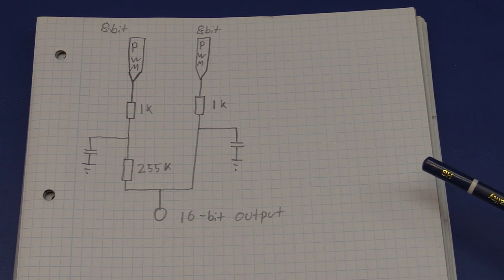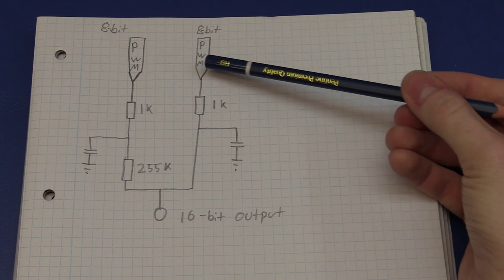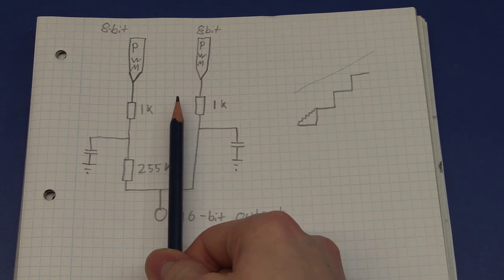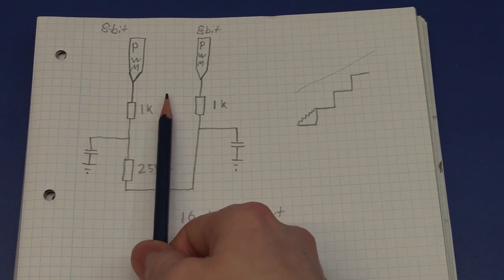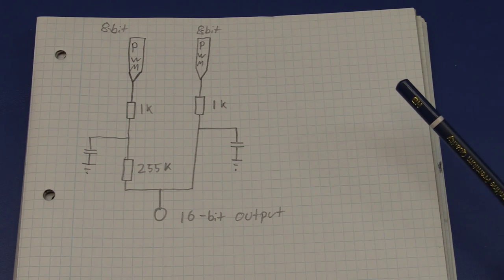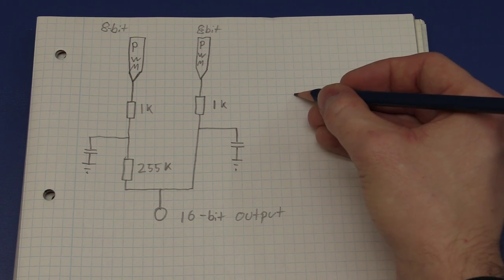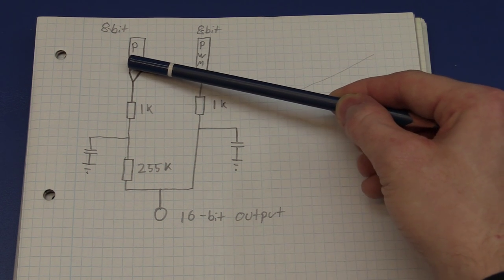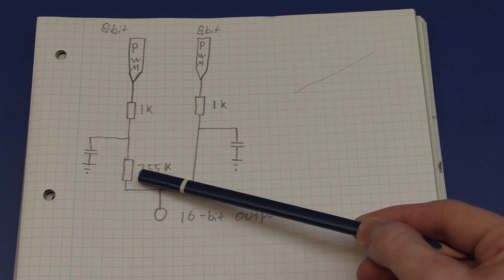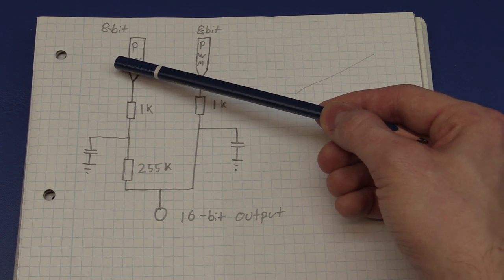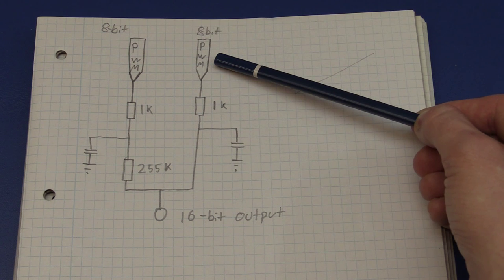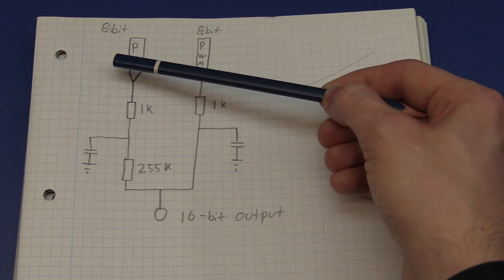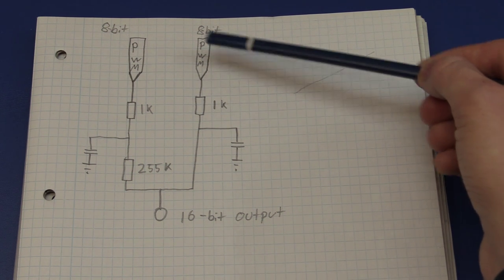Combining two PWM outputs won't be effectively 16-bit but it will certainly be a lot better than a single 8-bit one. It's actually not that difficult - you take the two PWM outputs and make a voltage divider between them, with the output in the middle. One side just has to be 256 times larger than the other. To ramp from 0 to 5 volts with 16-bit resolution, you count from 0 to 255 on the low output. Once you reach 255 you set it to 0 and increment the high output by 1.